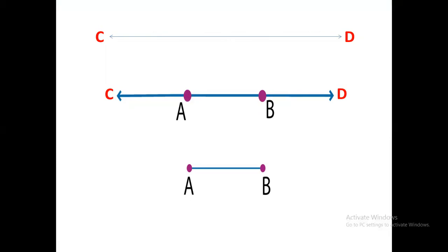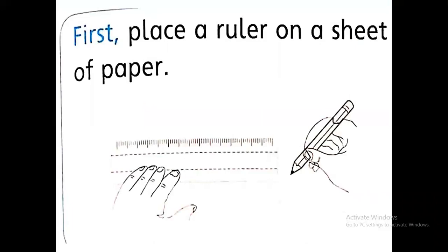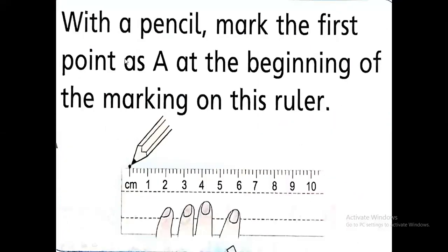So now how to draw a line segment? First, place a ruler on a sheet of paper. This is your ruler and you will put it on a white paper. With a pencil, mark the first point A. Your line is starting from here. This is zero centimeter. So first point should be at zero.